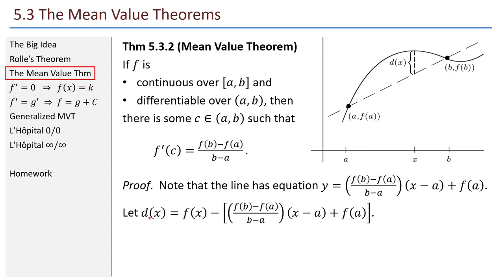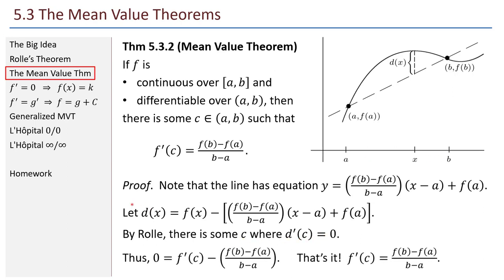The function d(x) satisfies Rolle's hypotheses. If you plug in a and plug in b, you'll find that you get the same answer: 0. And d is continuous on the closed interval, d is differentiable on the interior. So by Rolle's theorem, there's some c where d'(c) equals 0. Taking the derivative of d and plugging in c, we find 0 equals f'(c) minus that quotient. Now I can solve for f'(c) and find f'(c) equals f(b) minus f(a) over b minus a. There's the proof of the mean value theorem.